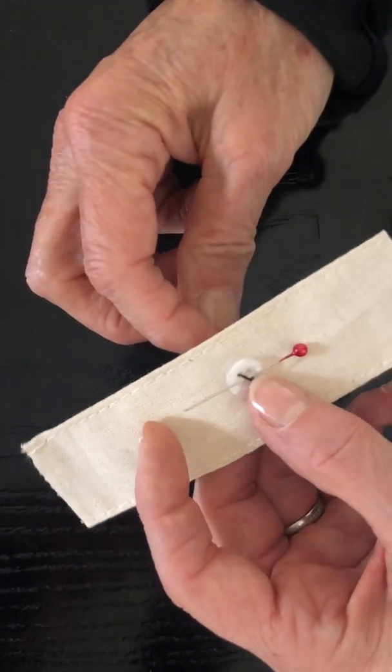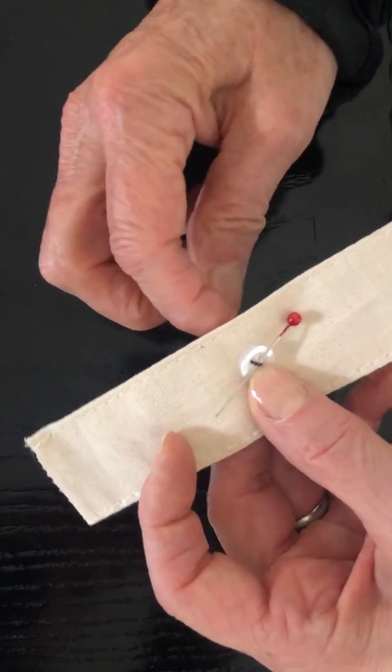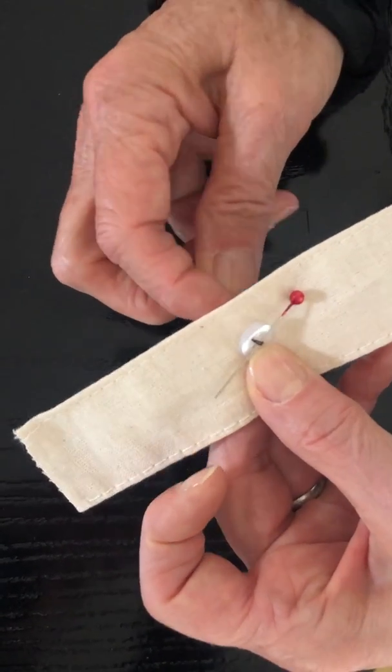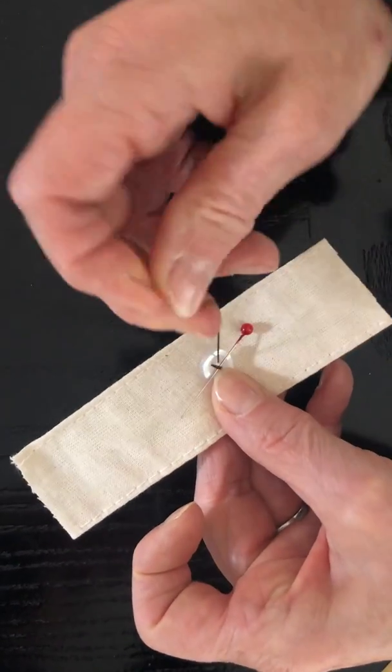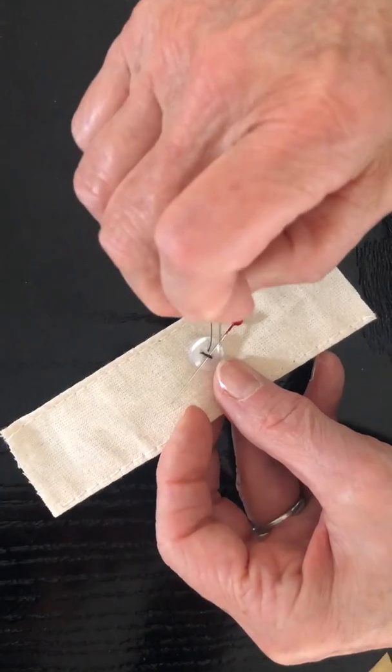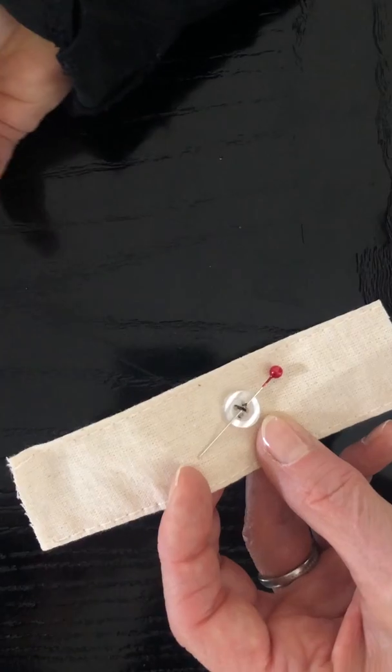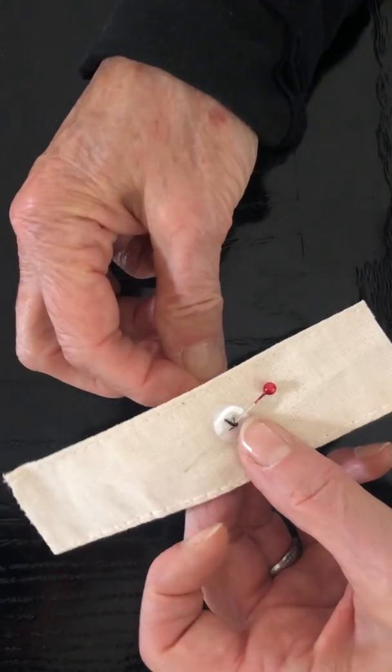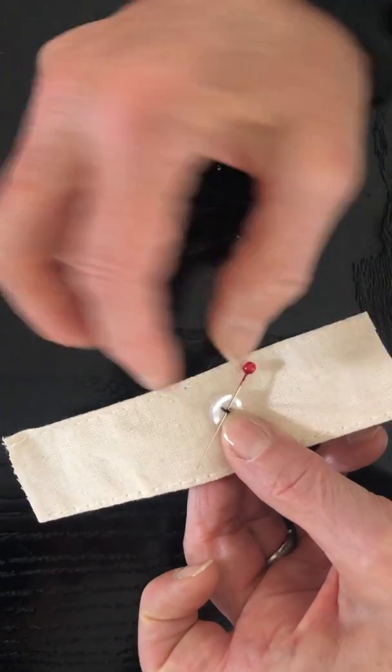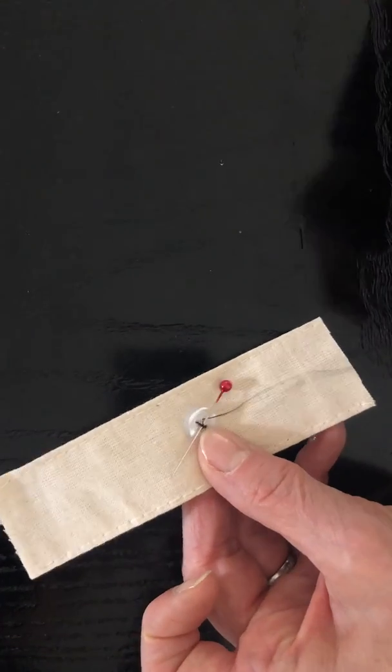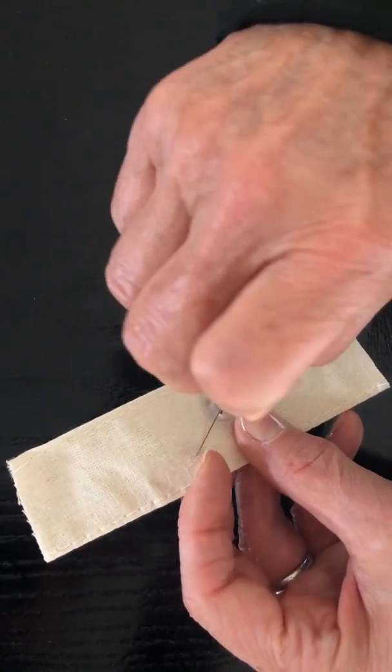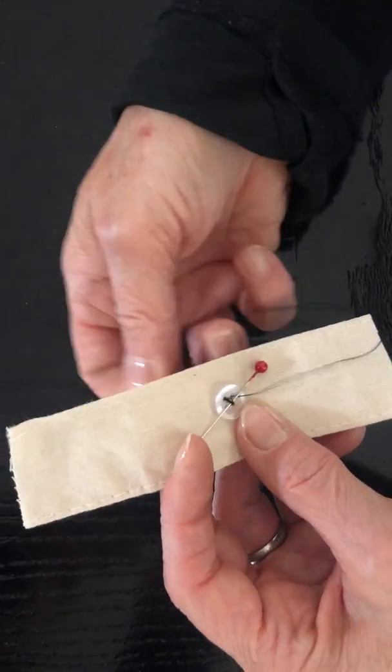You're going to continue this diagonally going from bottom to top, top to bottom until you've secured the button tightly. It might take a few swipes of the thread in order to get it just right.